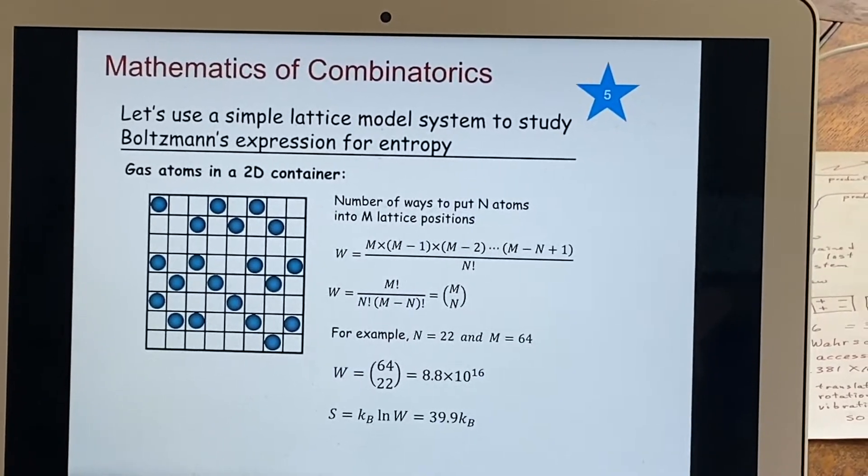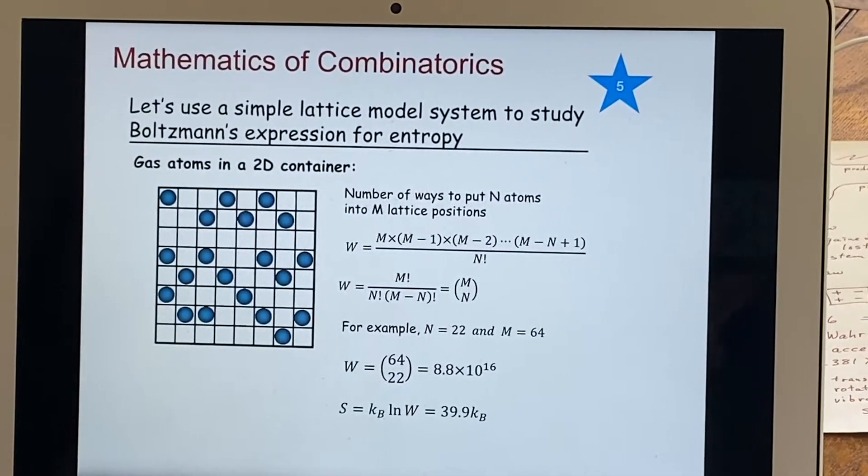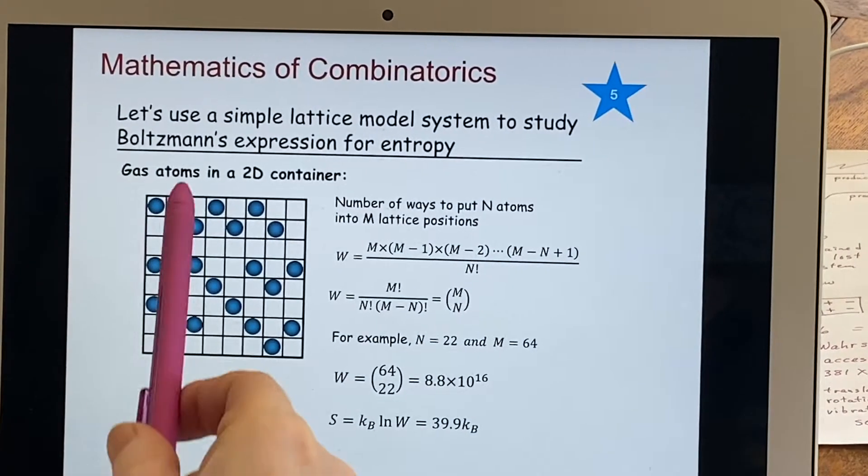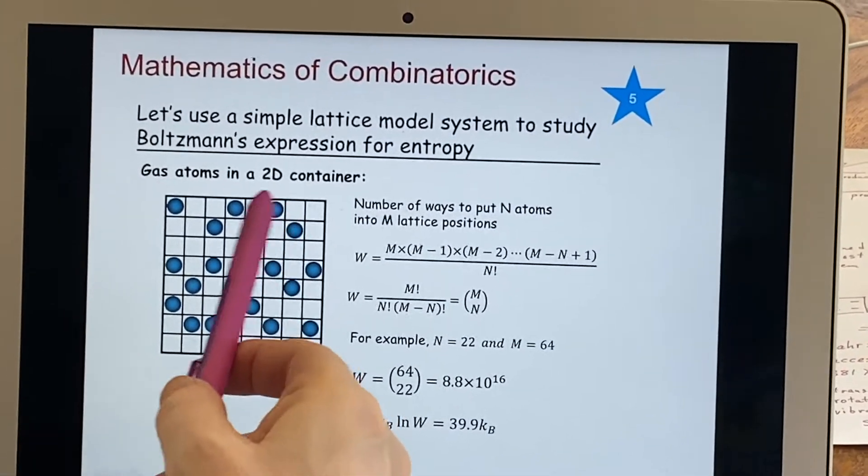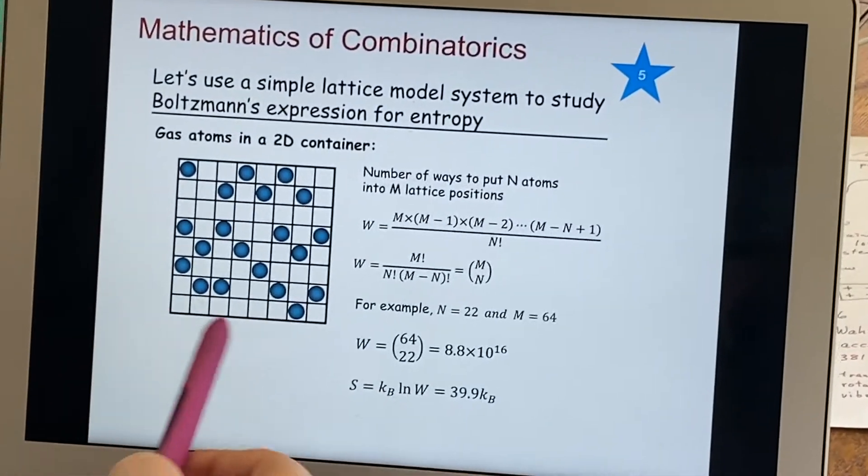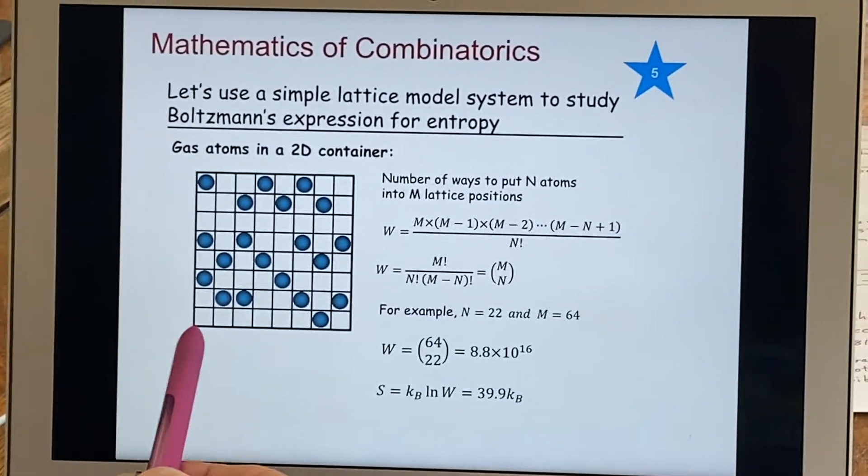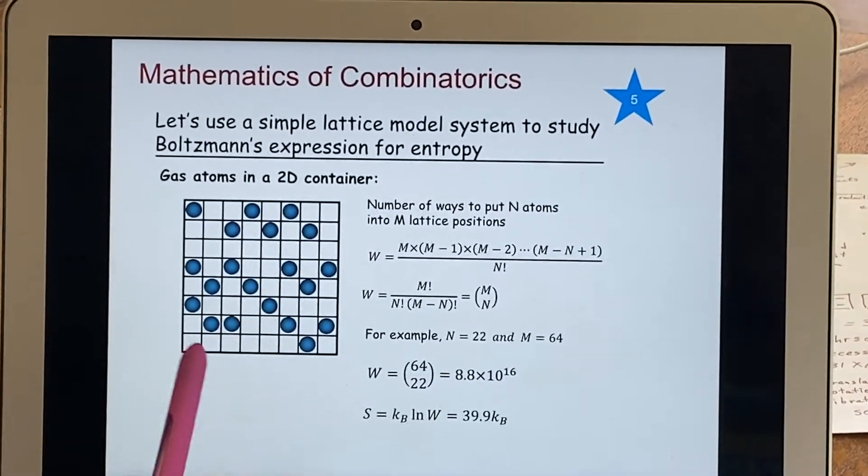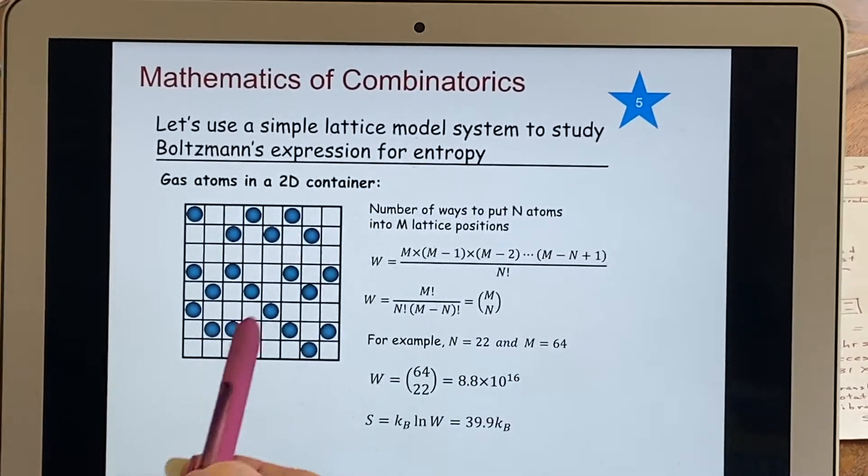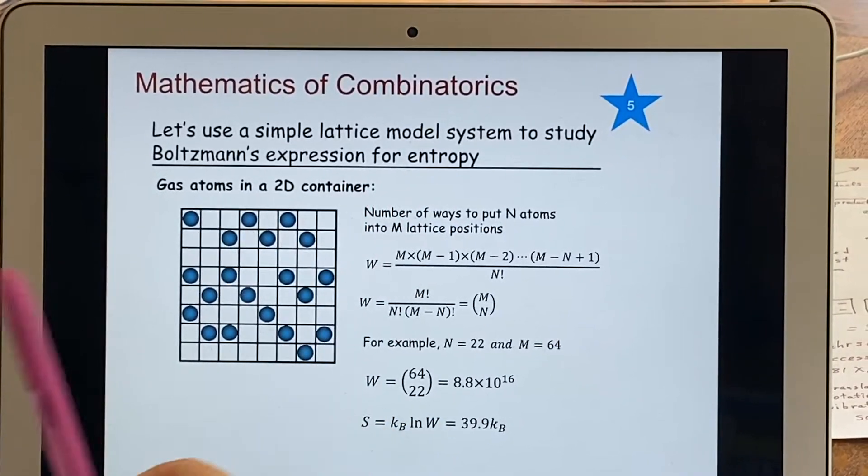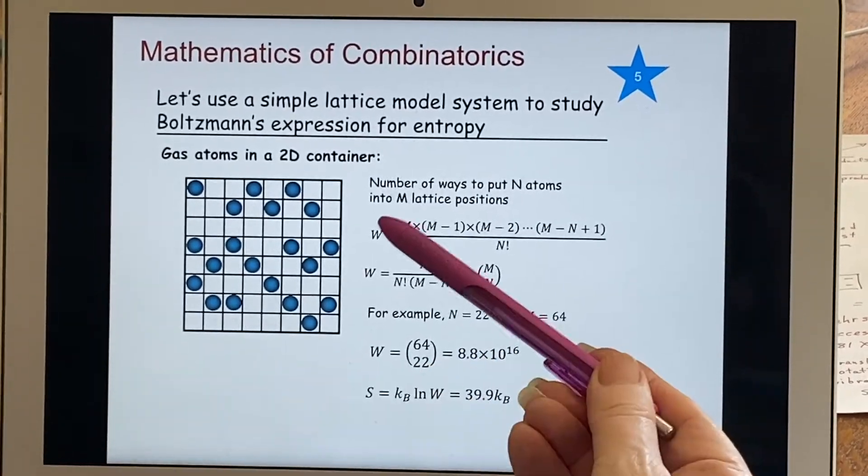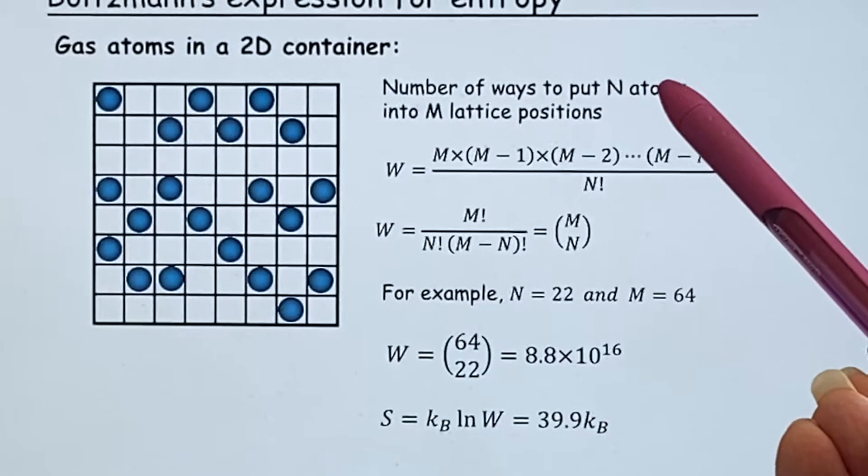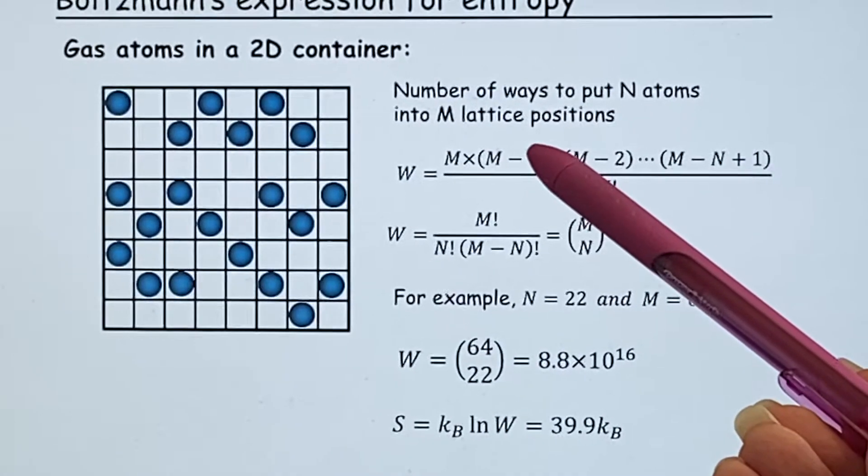Let's go back to Boltzmann. And we're going to do a little bit of mathematics, some combinatorics. If we have gas atoms, and we're going to simplify this by saying that it is a two-dimensional surface. They can only be in these little boxes. So only one atom per box, but you have more boxes than atoms. Hence, you can consider it to be sort of a gas. W would be the number of microstates. And it's how many ways can we put those atoms into the positions that we have available to us?